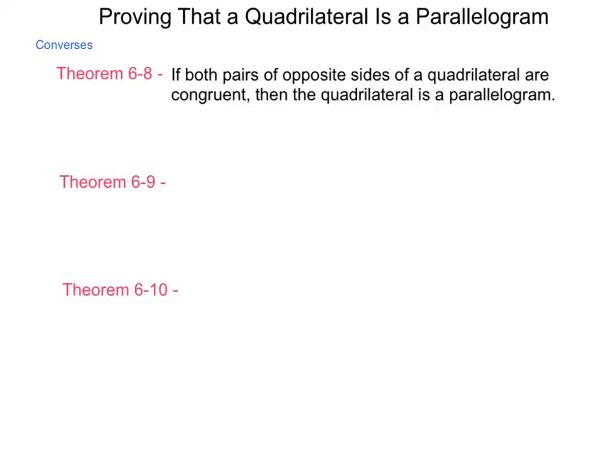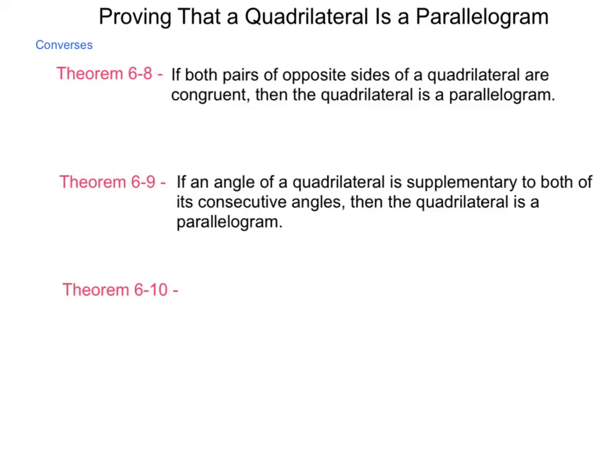Now theorem 6-9 is the converse of theorem 6-4 from earlier, and it states if an angle of a quadrilateral is supplementary to both of its consecutive angles, then the quadrilateral is a parallelogram.